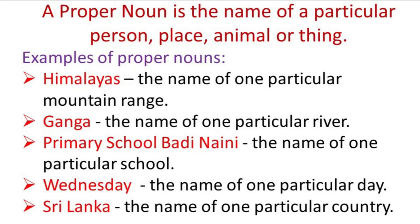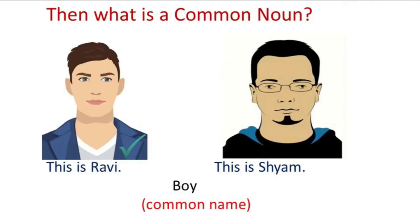Then, what is a common noun? Let us go back to our example. Do Ravi and Shyam have anything in common? Yes, each of them is a boy. Is boy a noun? Yes, it is. Boy is a common noun because it is a name common to all boys.